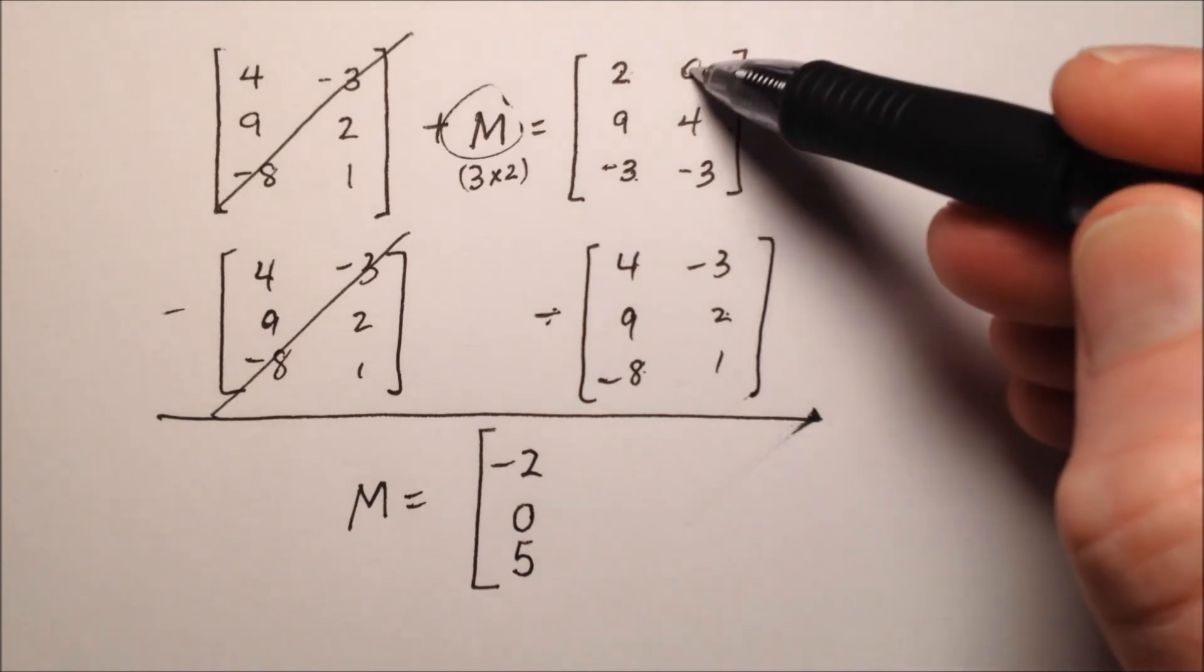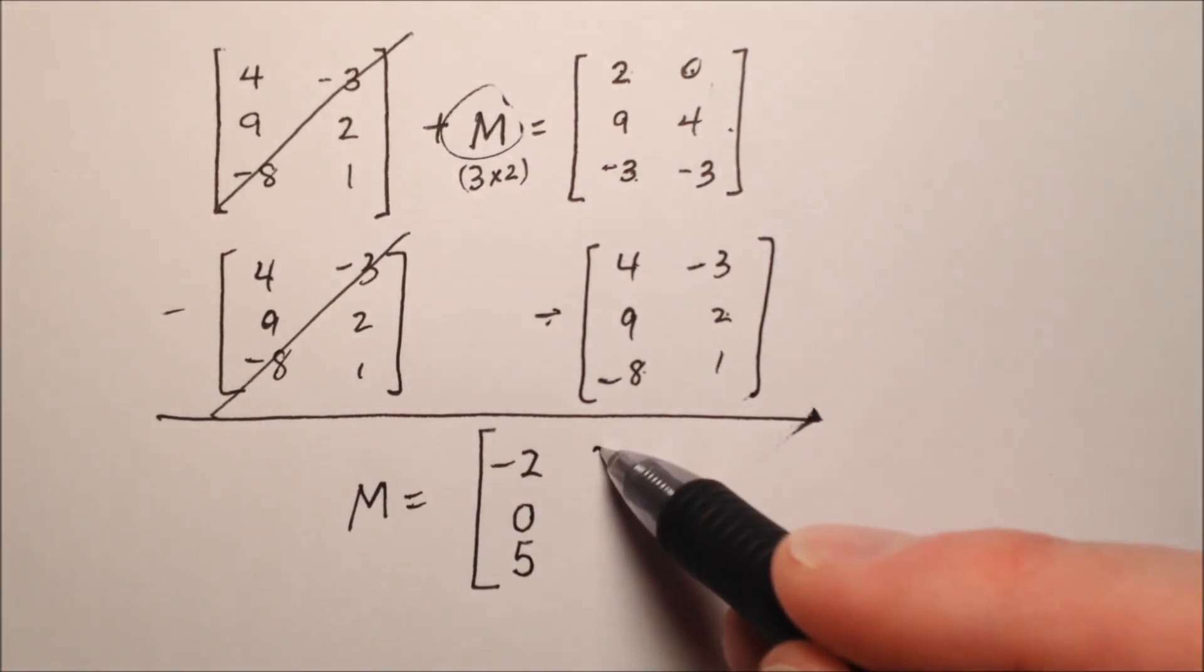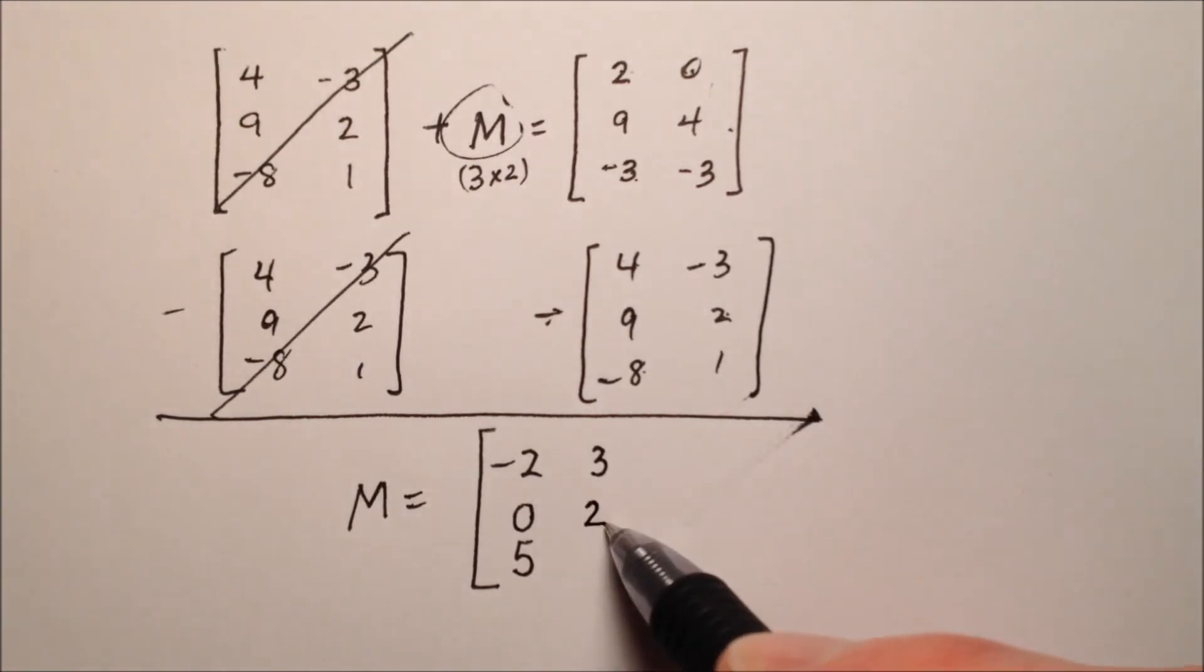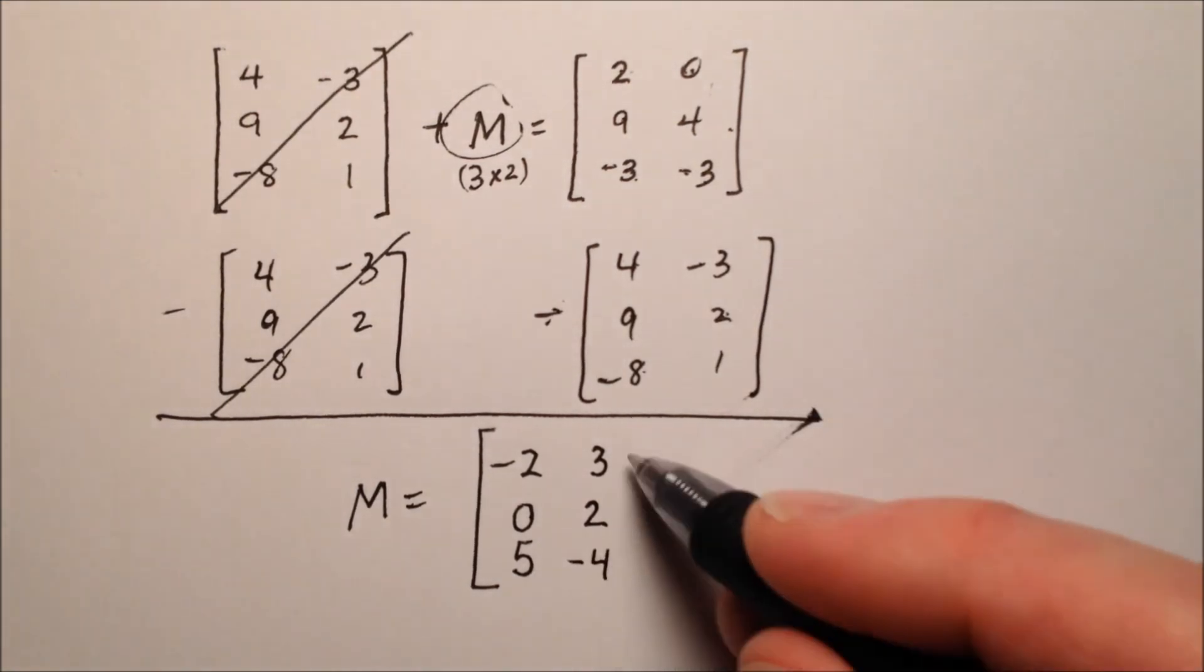So let's do this other column. 0 minus a negative 3 will be 0 plus 3. 4 minus 2, well, that will be 2, and negative 3 minus 1 will be negative 4.